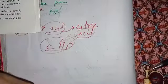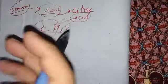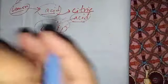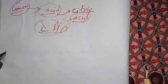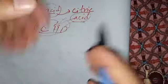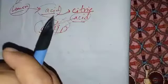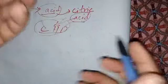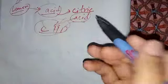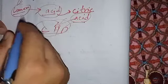We were talking about the definition of compounds. Lemon contains citric acid, and acids are made up of different elements. So definitely, if they are made up of different elements, they are compounds.